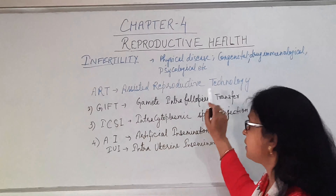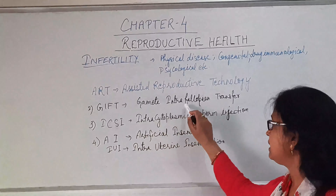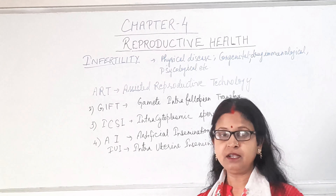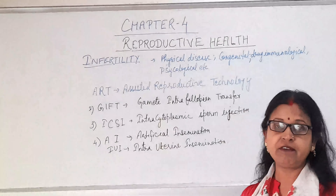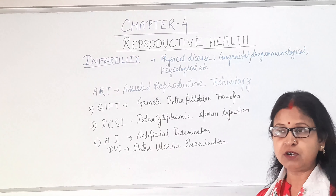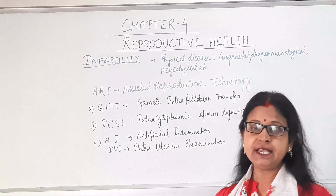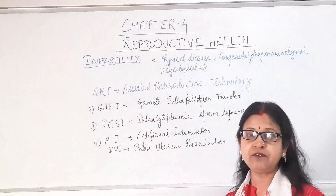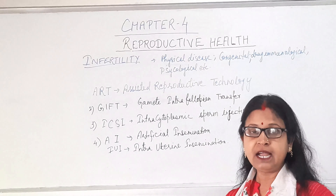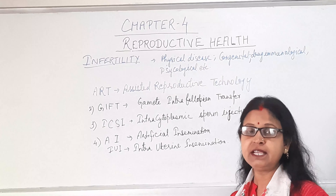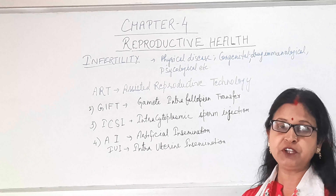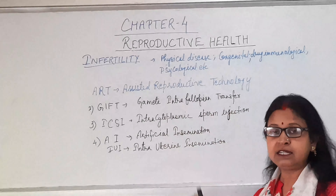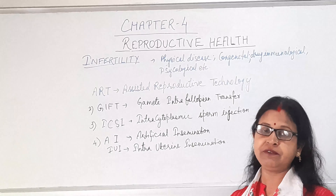The next ART method is GIFT, that is Gamete Intra Fallopian Transfer. This is used for females who can provide the appropriate environment for development of the zygote but are not producing a viable ovum, or the ovum quality is not good. In such cases, the ovum is collected from a donor and introduced into the fallopian tube of the woman, which is why it is known as Gamete Intra Fallopian Transfer. Fusion and further development proceed naturally.